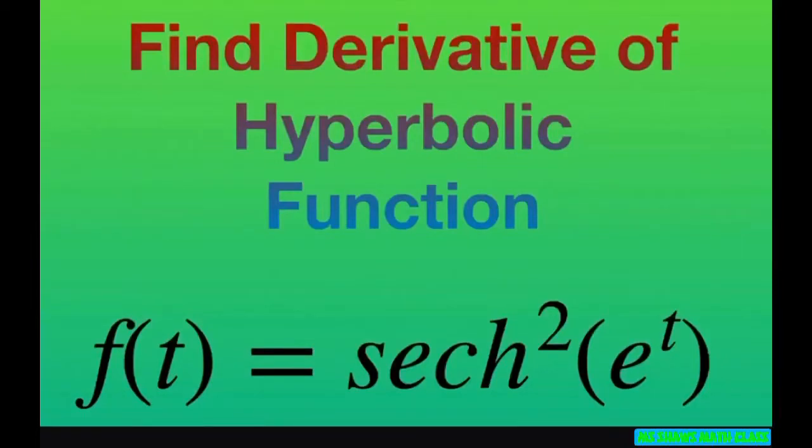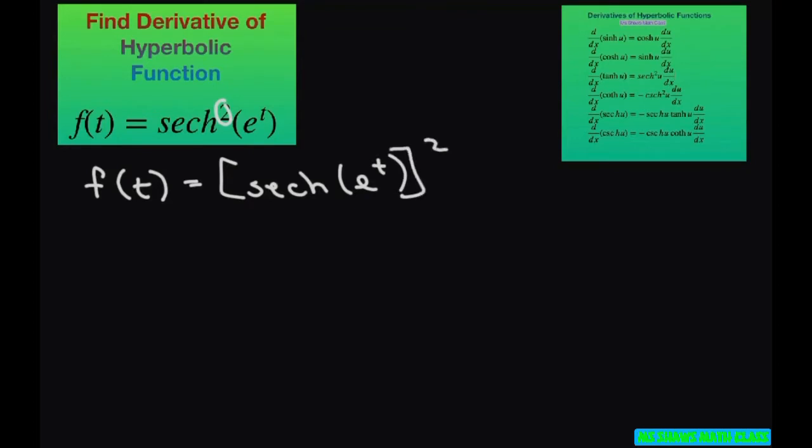Hi everyone. We're going to find the derivative of the hyperbolic function f of t equals hyperbolic secant squared of e to the power of t. Let's rewrite this as f of t equals hyperbolic secant of e to the t power, and then square it like that.